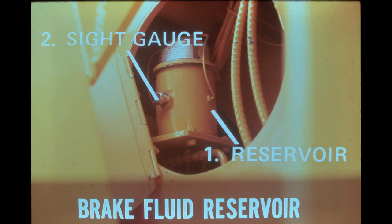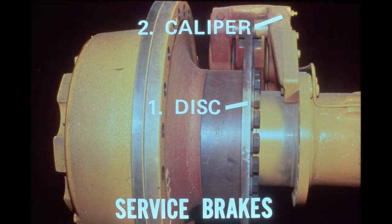The 540 employs air over hydraulic dry caliper disc brakes, which are located at the outboard ends of each axle. The brake disc is bolted to the wheel hub, and the brake caliper assembly is bolted to the axle housing. When the service brakes are applied, four pistons in the caliper assembly compress the rotating brake disc between two pads and stop the loader.